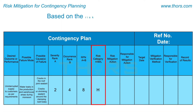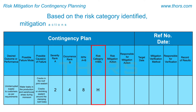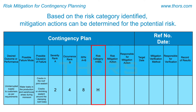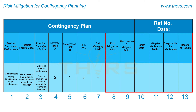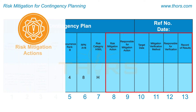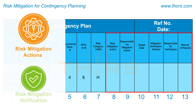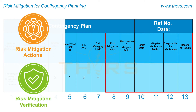Based on the risk category identified, mitigation actions can be determined for the potential risk. The columns from 8 to 13 in the Contingency Plan template are used to record the risk mitigation actions and their verification.